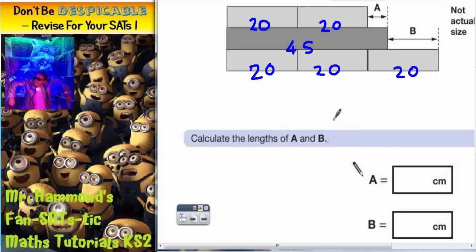So calculate the lengths of A and B. Now we can see that this distance here is the two 20s put together, so that distance is 40. But from here to here it's 45 because that's the length of the dark grey one. So this little gap here must be the difference between 40 and 45.